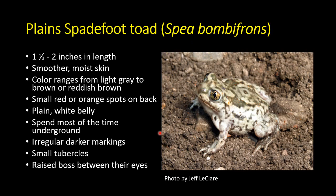The last species is the plains spadefoot toad, Spea bombifrons. It's a smaller species — only about two inches in length. It's technically a toad but has smooth, moist skin because these toads spend almost all of their life underground. They rarely come out — only during storm events in the spring and summer to breed, using tire ruts or any standing water. They go from eggs to toadlet in under two weeks when temperatures are right. They're quite variable in color — light gray, brown, or reddish — with small red or orange spots on their back and a plain white belly.